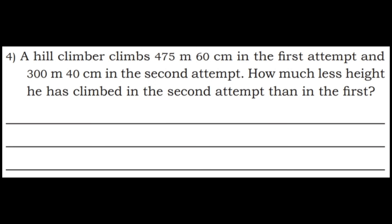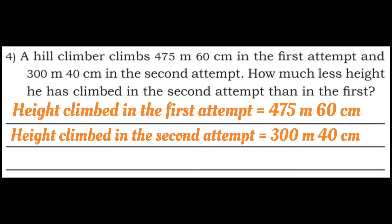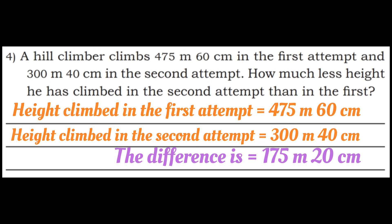Q4: A hill climber climbs 475 meter 60 centimeter in the first attempt and 300 meter 40 centimeter in the second attempt. How much less height did he climb in the second attempt than in the first? Height in first attempt = 475 meter 60 centimeter. Height in second attempt = 300 meter 40 centimeter. Difference: 0 minus 0 is 0, 6 minus 4 is 2, 5 minus 0 is 5, 7 minus 0 is 7, 4 minus 3 is 1. Answer: 175 meter 20 centimeter.